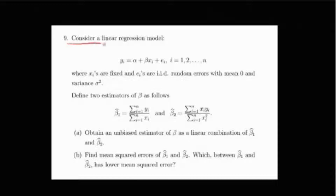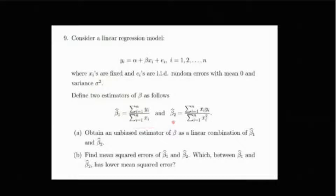The problem says: consider a linear regression model yᵢ = α + βxᵢ + eᵢ, for i from 1 to n, where xᵢ's are fixed and eᵢ's are iid random errors with mean zero and variance σ². Two estimators of β are defined: β̂₁ = Σyᵢ / Σxᵢ, and β̂₂ = Σxᵢyᵢ / Σxᵢ². Part one: find an unbiased estimator of β as a linear combination of β̂₁ and β̂₂. Part two: find the MSE of β̂₁ and β̂₂, and determine which has lower MSE.